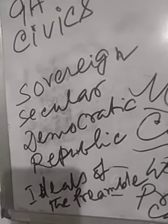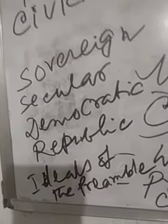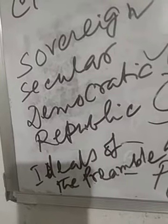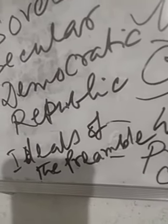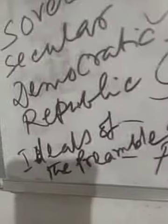Number 1: Written Constitution. Number 2: Preamble to the Constitution. Number 3: Sovereign, Secular, Democratic, Republic — and numbers 4, 5, 6, and 7: the ideals of the Preamble to the Constitution.